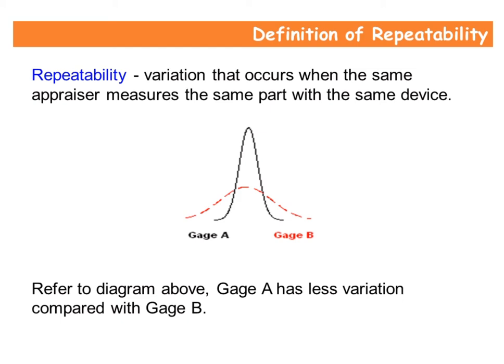Refer to the diagram above. Gauge A has less variation compared with gauge B.